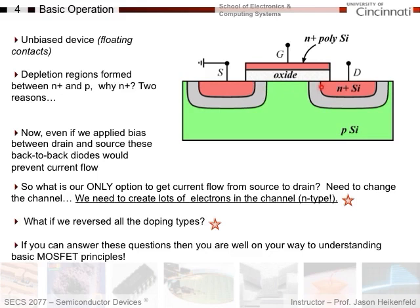Without a gate voltage, I'd have P-N junction and P-N junction, and one would block current flow because it would be reverse biased. The only option to get conduction is to make the channel region N-type. We're going to focus most of our attention on how to switch this region from P-type to N-type material electrically. It's more complicated than just reducing the barrier — we have to switch this into N-type material so we no longer have PN junctions on either side.